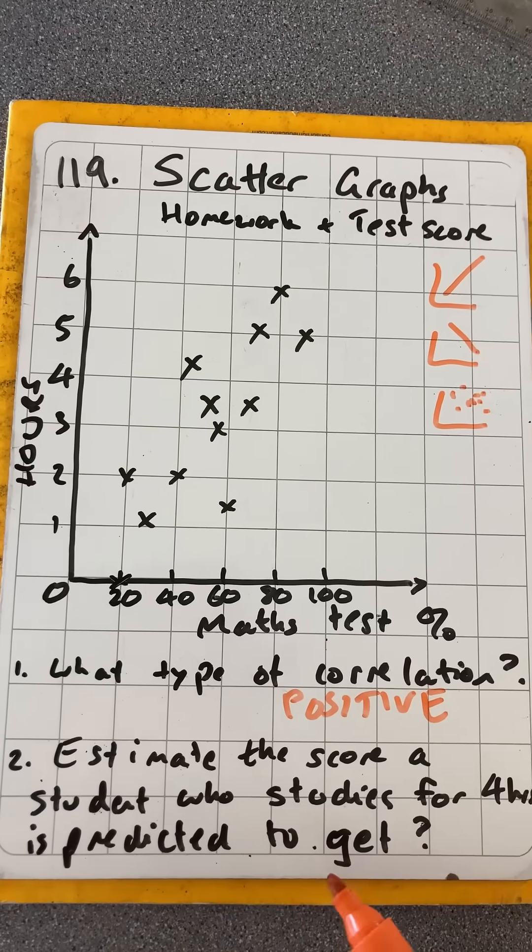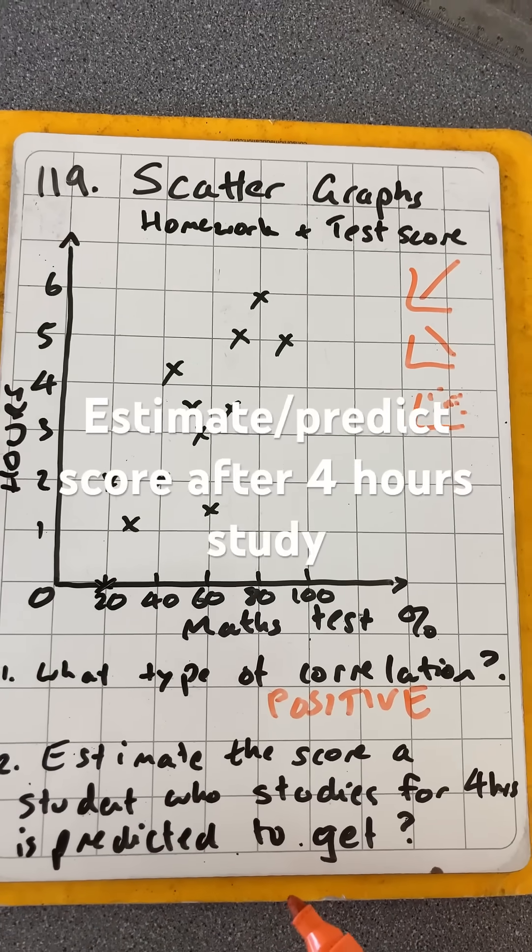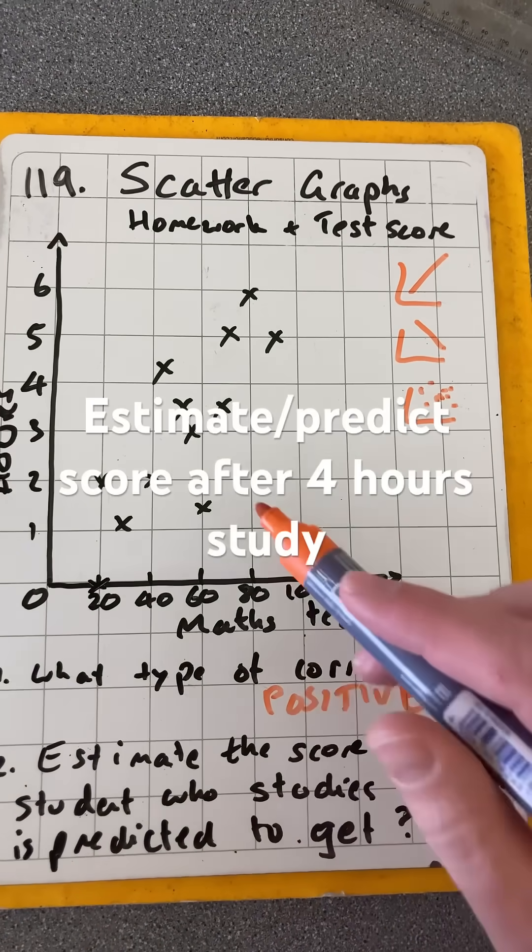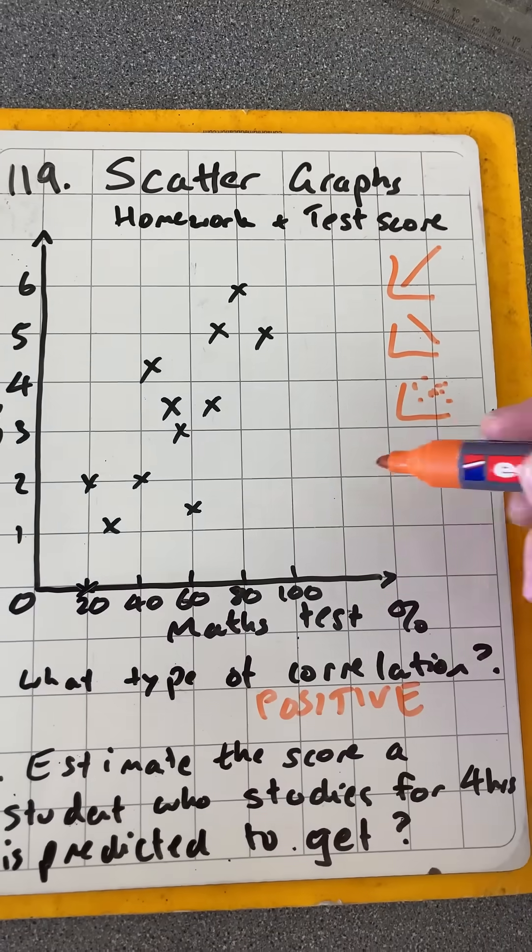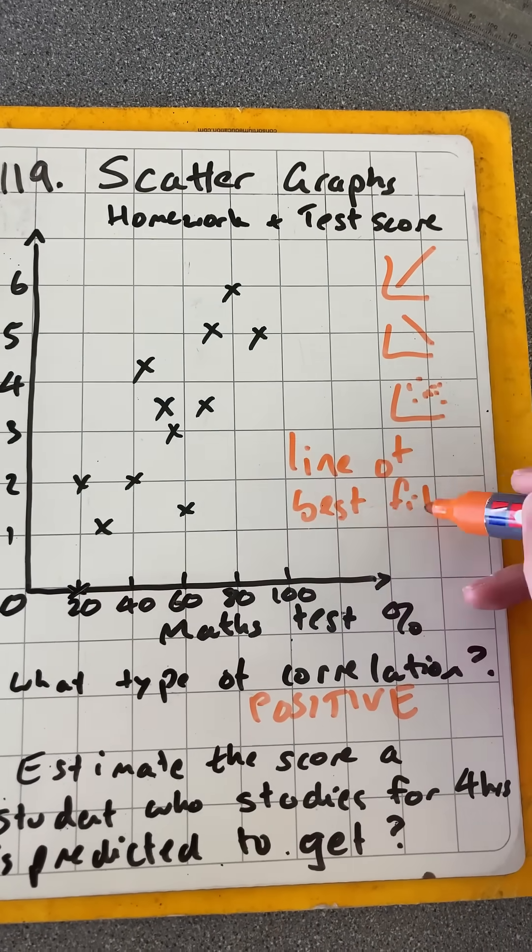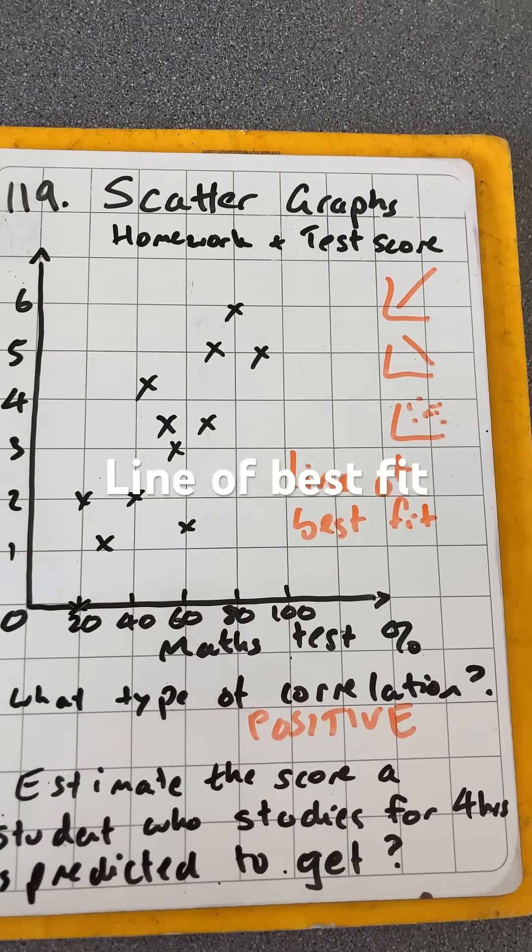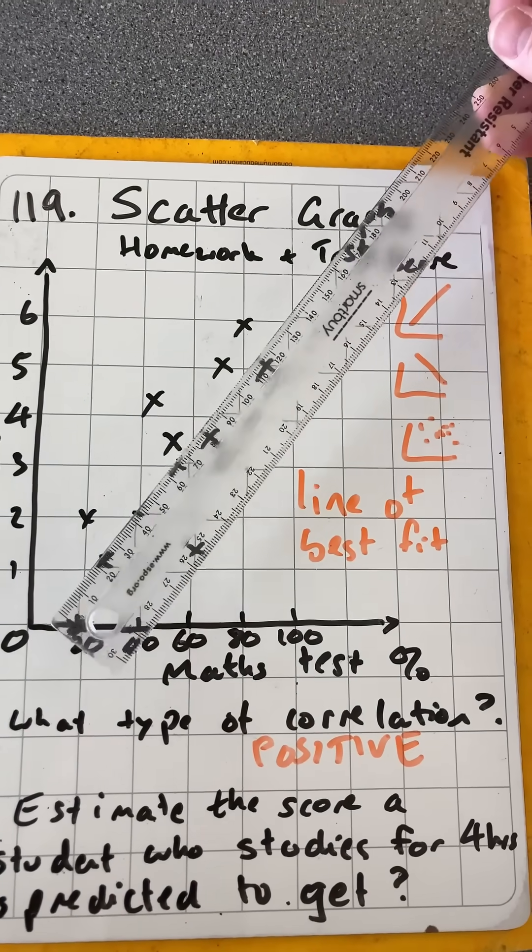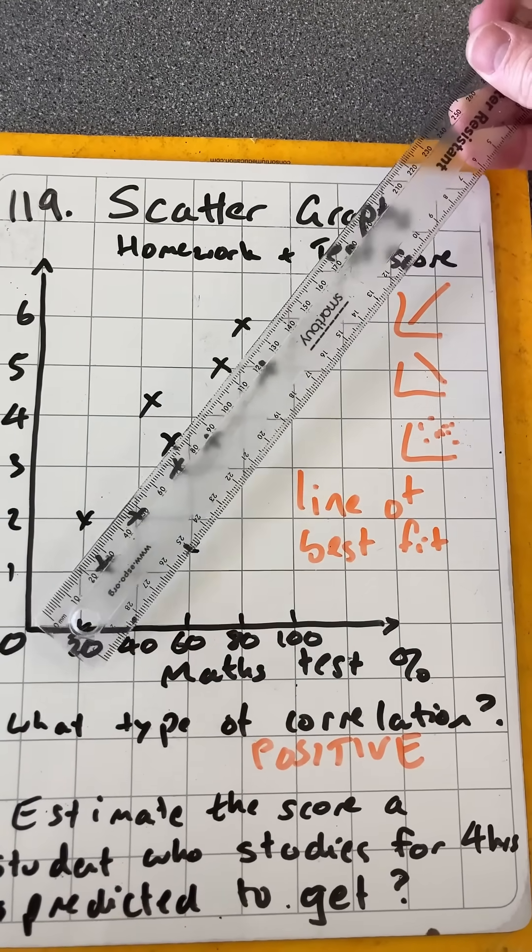The next question says, estimate the score a student who studies for four hours is predicted to get. So what we need to do here is use a line of best fit, which means a rough idea of the slope without using any advanced stats.